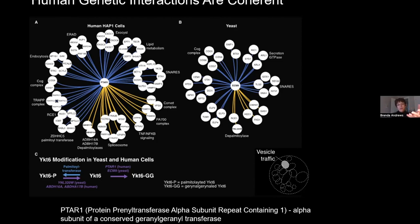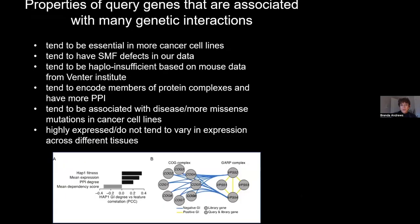Some properties associated with genes that have many genetic interactions in the human network: they tend to be essential in more cancer cell lines, tend to have more single mutant defects, tend to be haploinsufficient based on mouse data from the Venter Institute, tend to encode members of protein complexes with more protein-protein interactions, are more often associated with disease or missense mutations in cancer cell lines, and tend to be more highly expressed and not vary as much in expression across different tissues. These properties may be elaborated as we bring more bioprocesses onto the network.